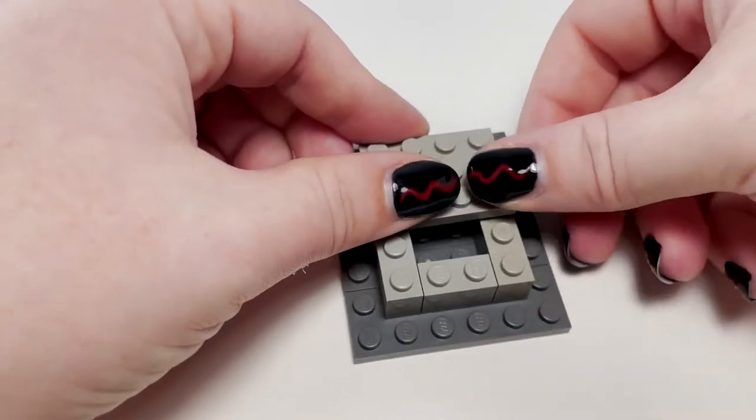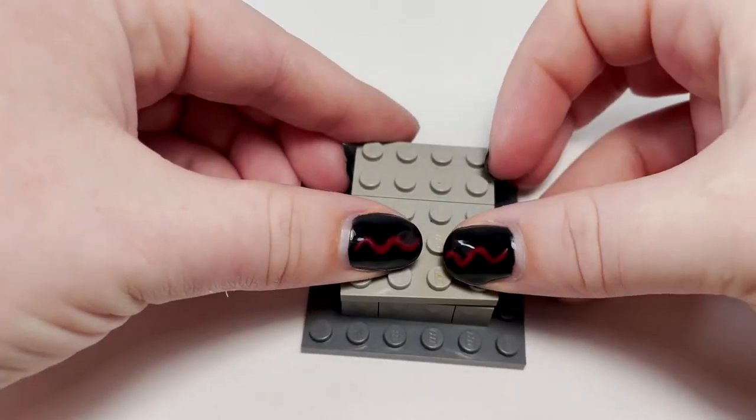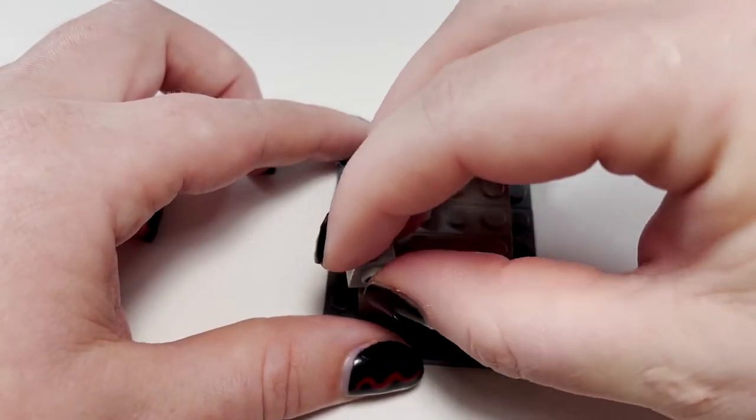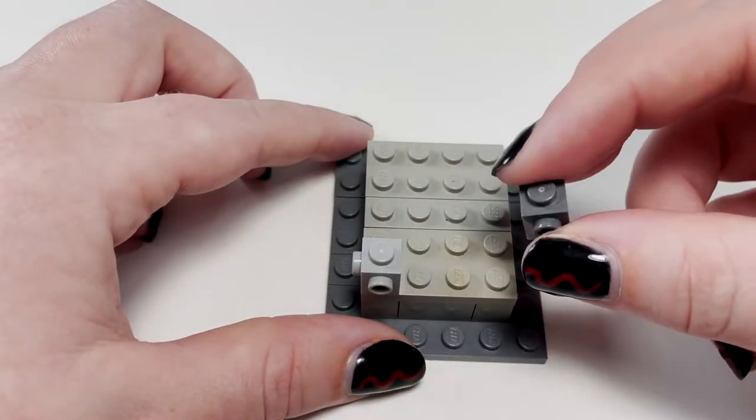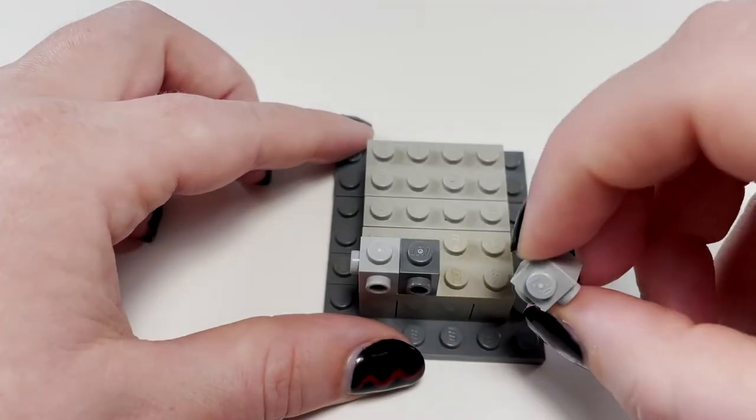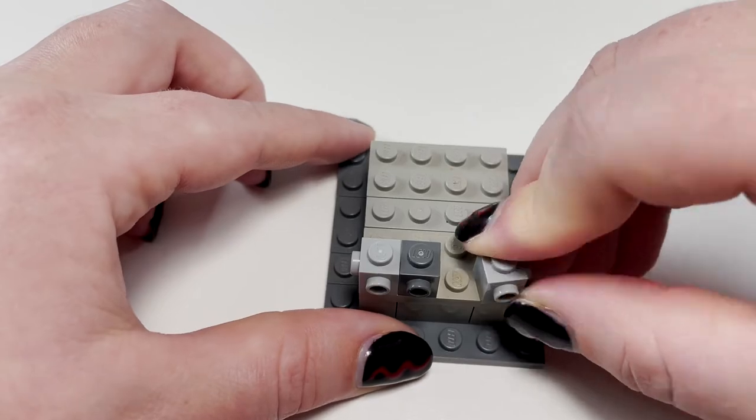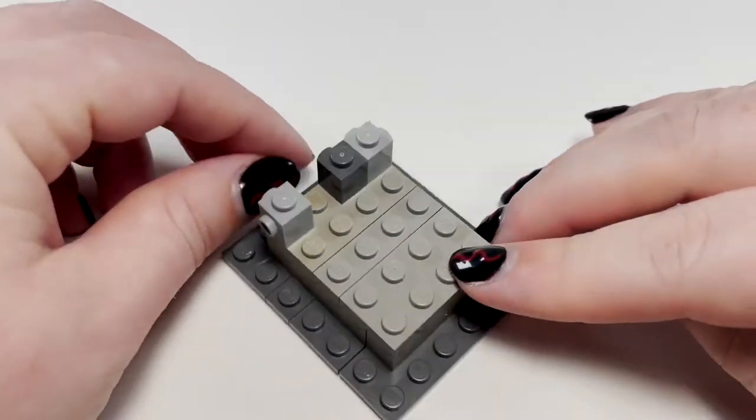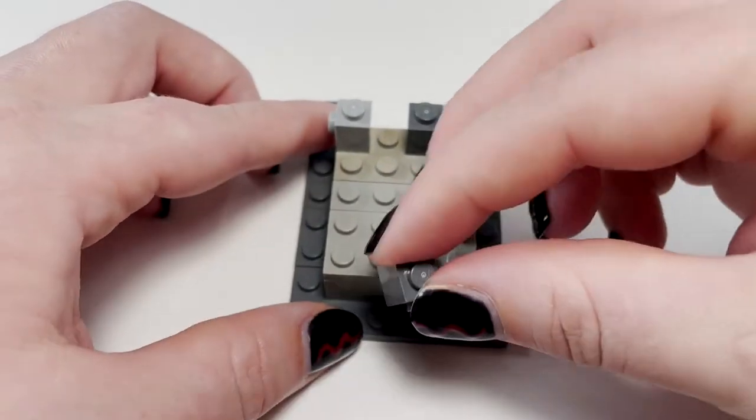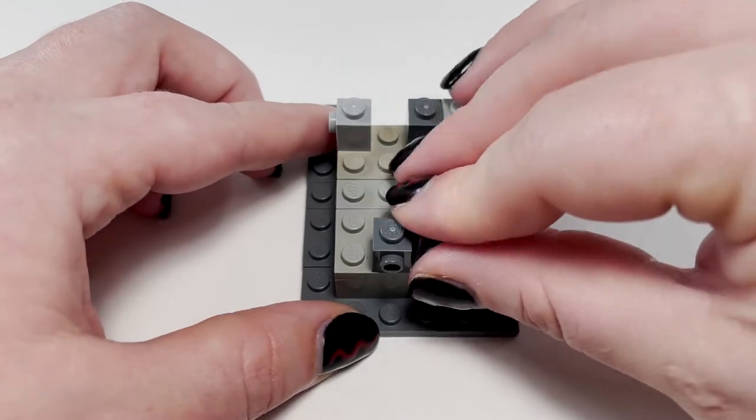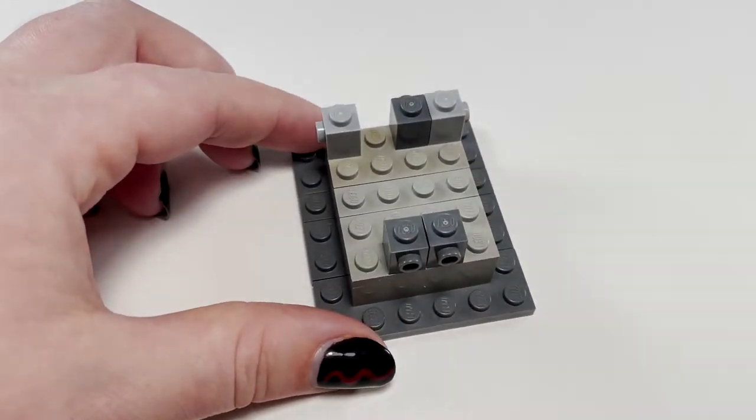We're starting out with simple bricks and plates to form the base of the plinth. The top layer is composed of SNOT bricks which will allow us to add some decorative tiles around the edge.